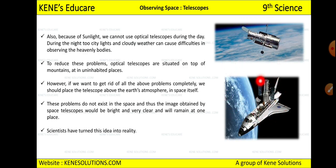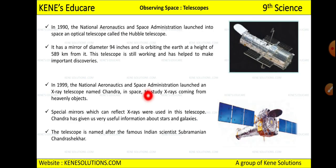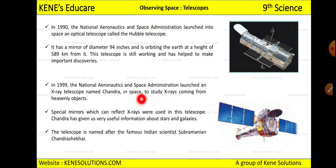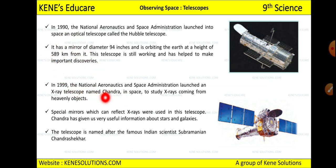In 1990, NASA — the National Aeronautics and Space Administration — launched into space an optical telescope called the Hubble telescope. It has a mirror of 94 inches diameter, orbits at a height of 589 kilometers, and this telescope is still working and has helped make many important discoveries.